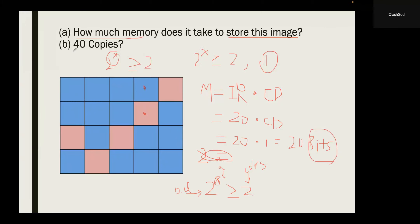Now, if we want to store 40 copies of this photo, how much memory do we need? It's a no-brainer. Each copy needs 20 bits, so for 40 copies, we just do 40 times 20 because each copy costs 20 bits. We get 800 bits. If you have 40 copies, just multiply 40 by the amount of memory one photo takes.